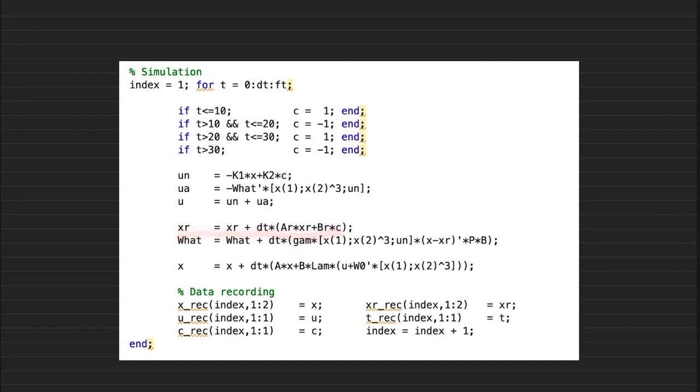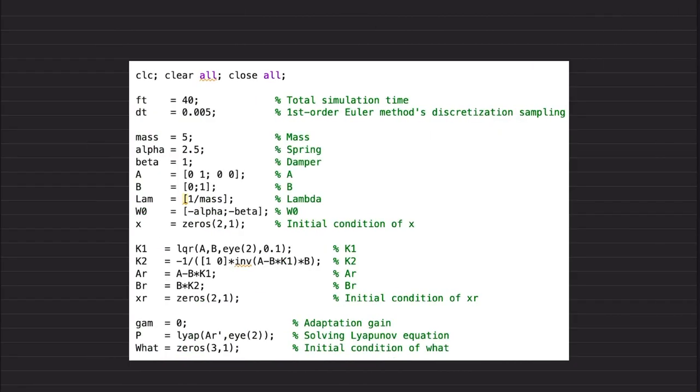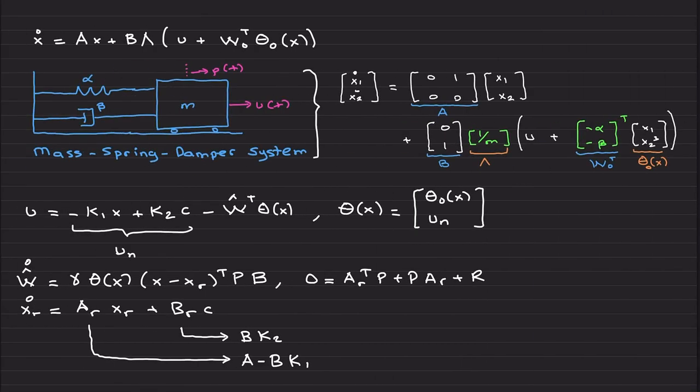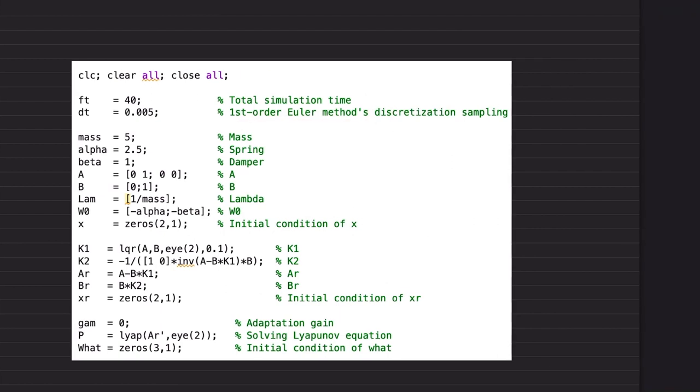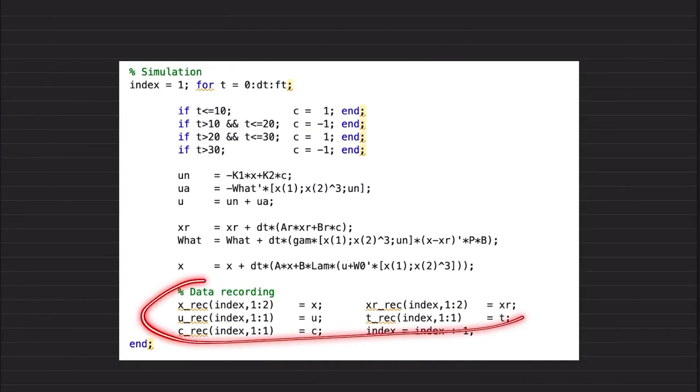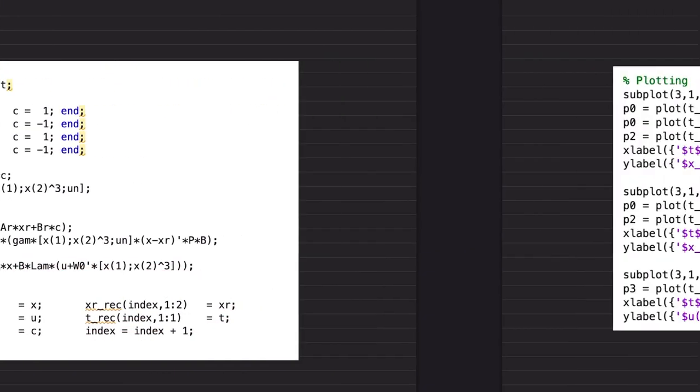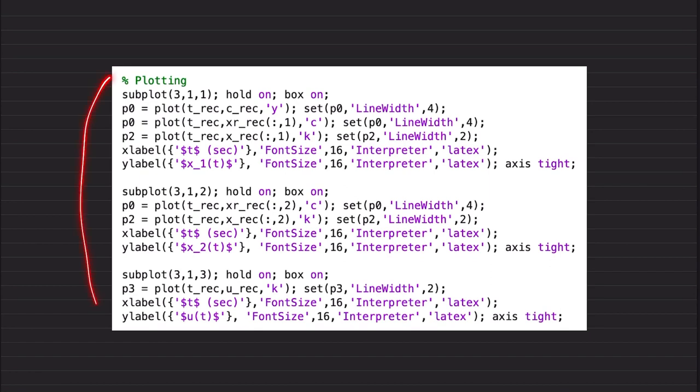This is how I implement the reference model, this is how I implement the weight update law, and this is the actual system: lambda, w zero. You can pause the video, take the screenshot. This is basically what we theoretically have in the slide, just coded using first-order Euler's method. Data recording part is saving everything, and then plotting everything. I'm not going to dive into the details here. There are many ways to plot.